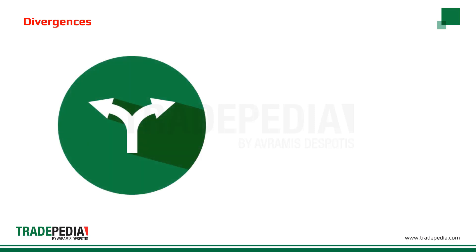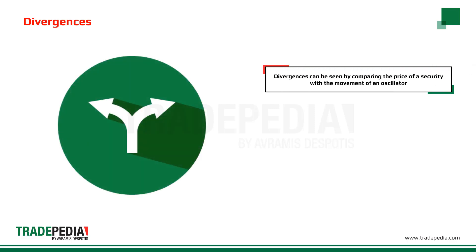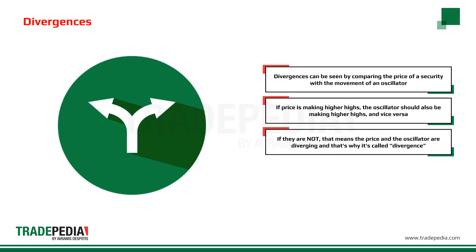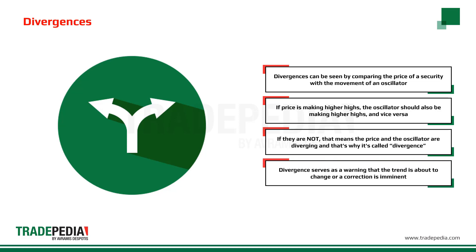The third way of analyzing oscillators is through divergences. Divergences can be seen by comparing the price of a security with the movement of an oscillator. If price is making higher highs, the oscillator should also be making higher highs, and vice versa. If they are not, that means the price and the oscillator are diverging — and that's why it's called divergence. Divergence serves as a warning that the trend is about to change or a correction is imminent.